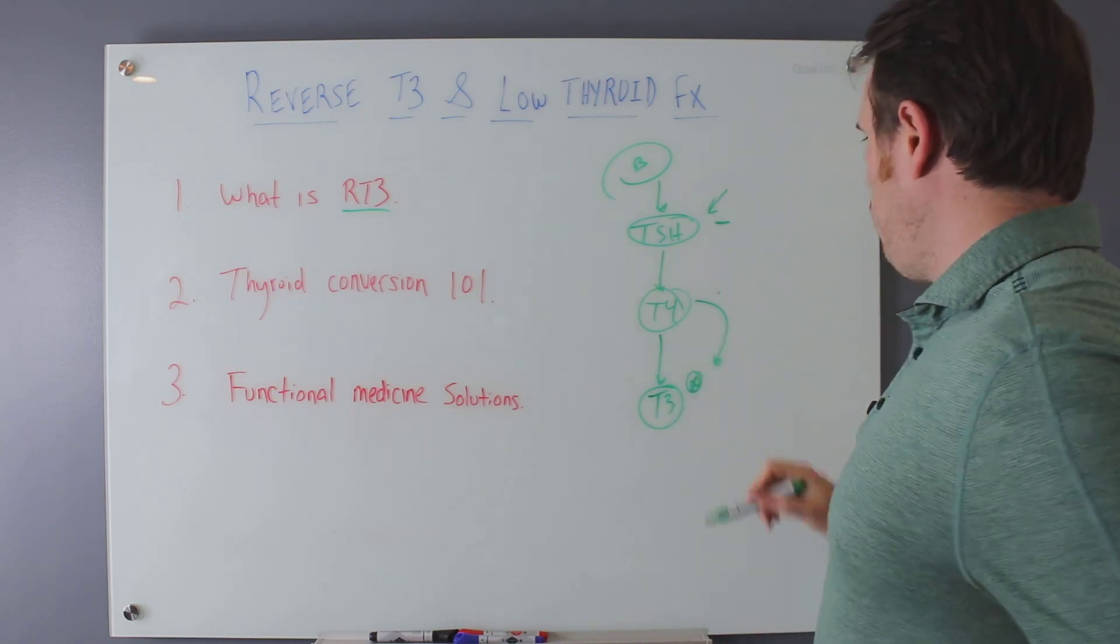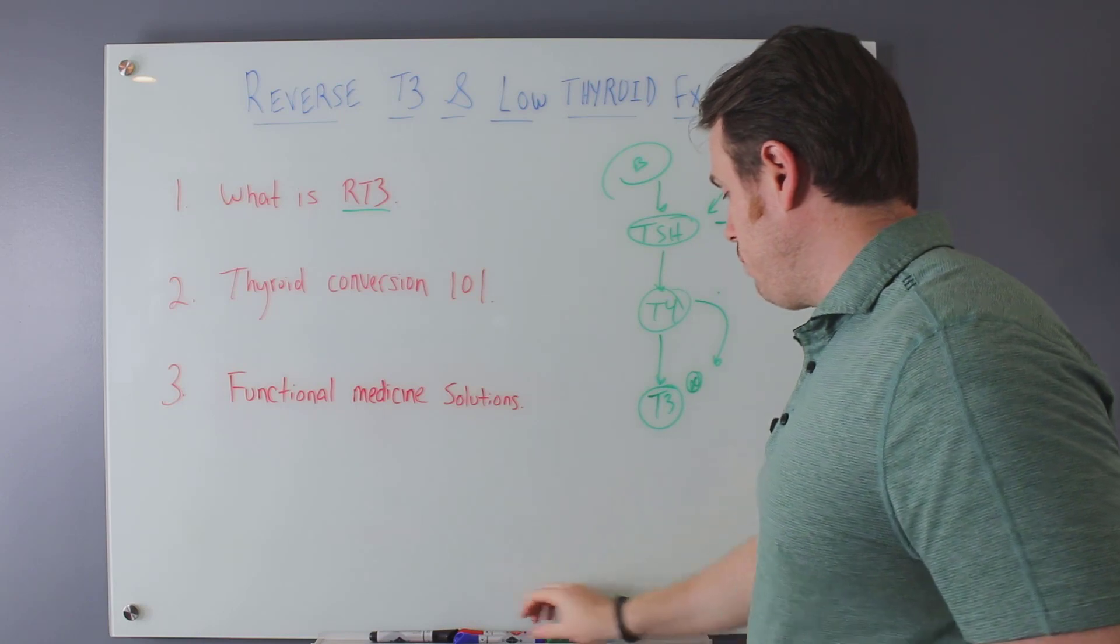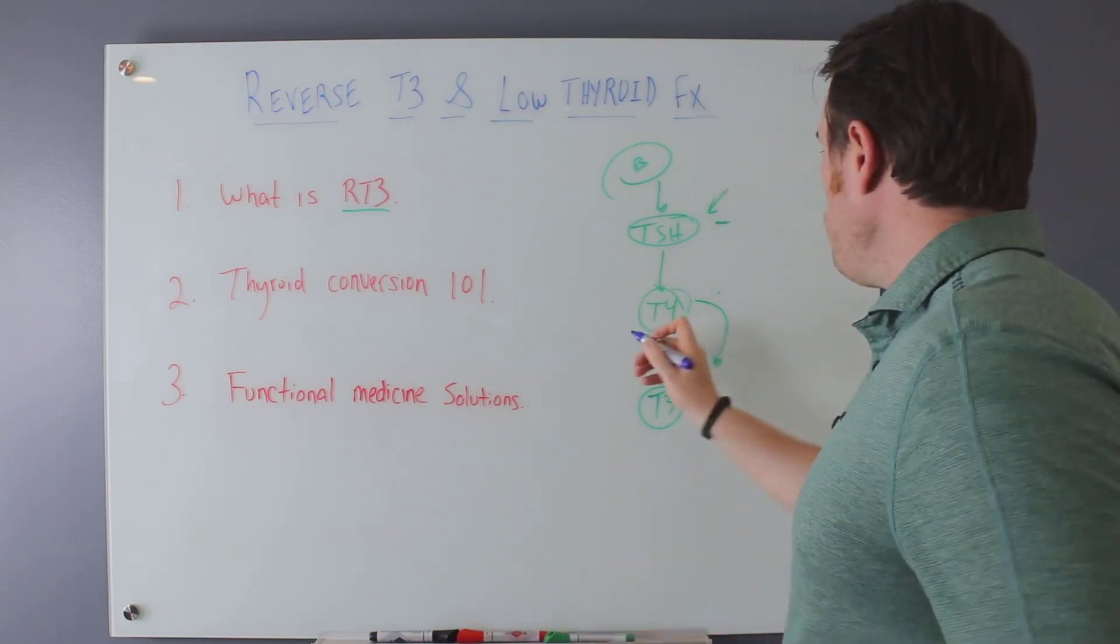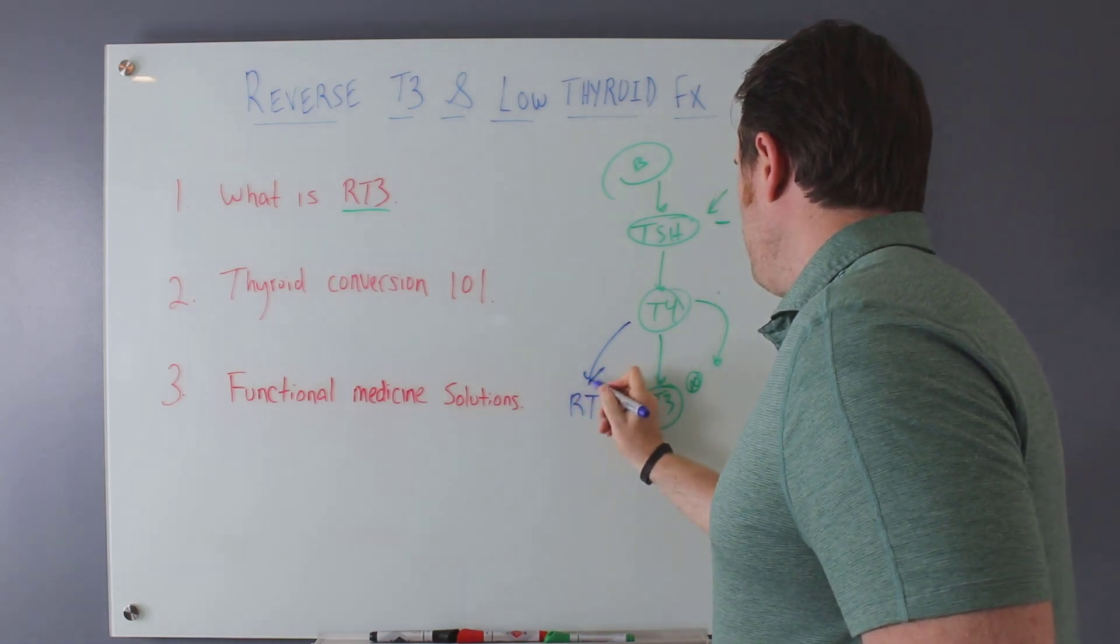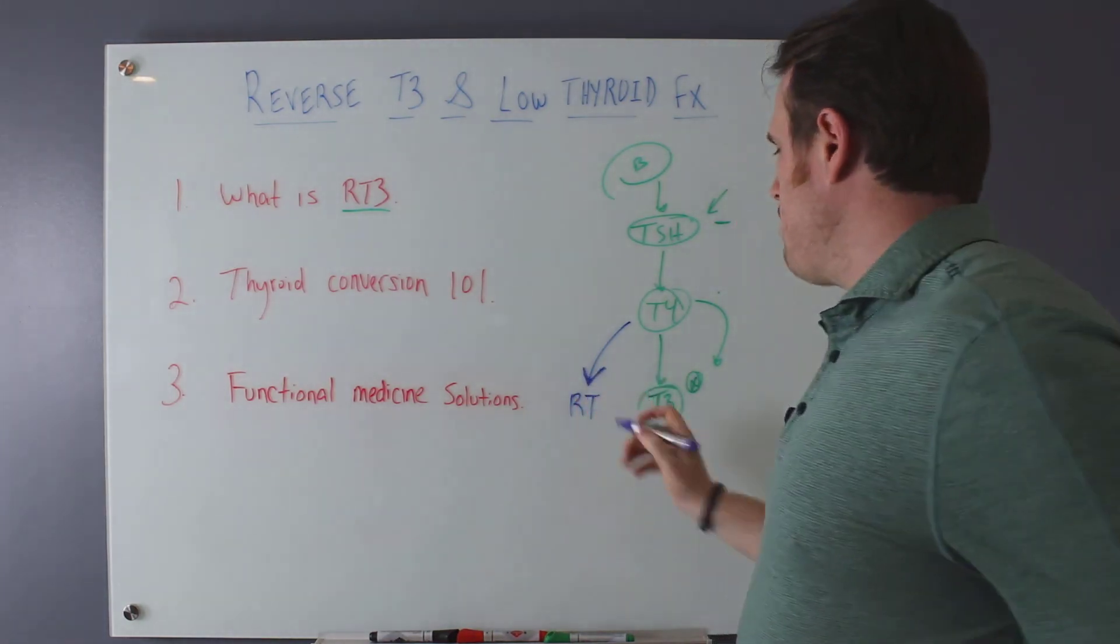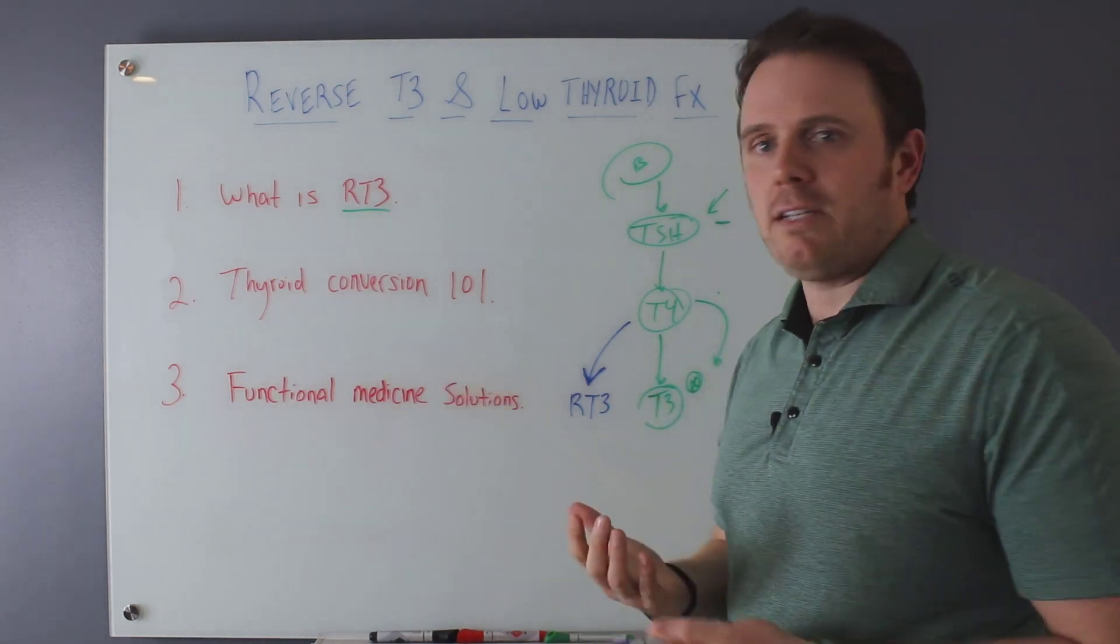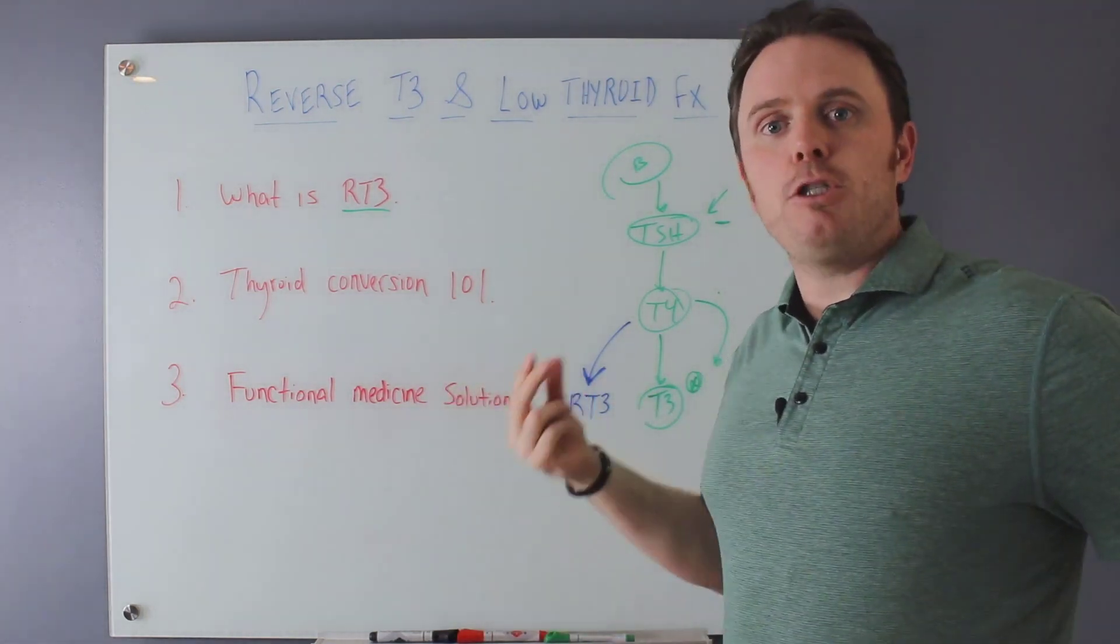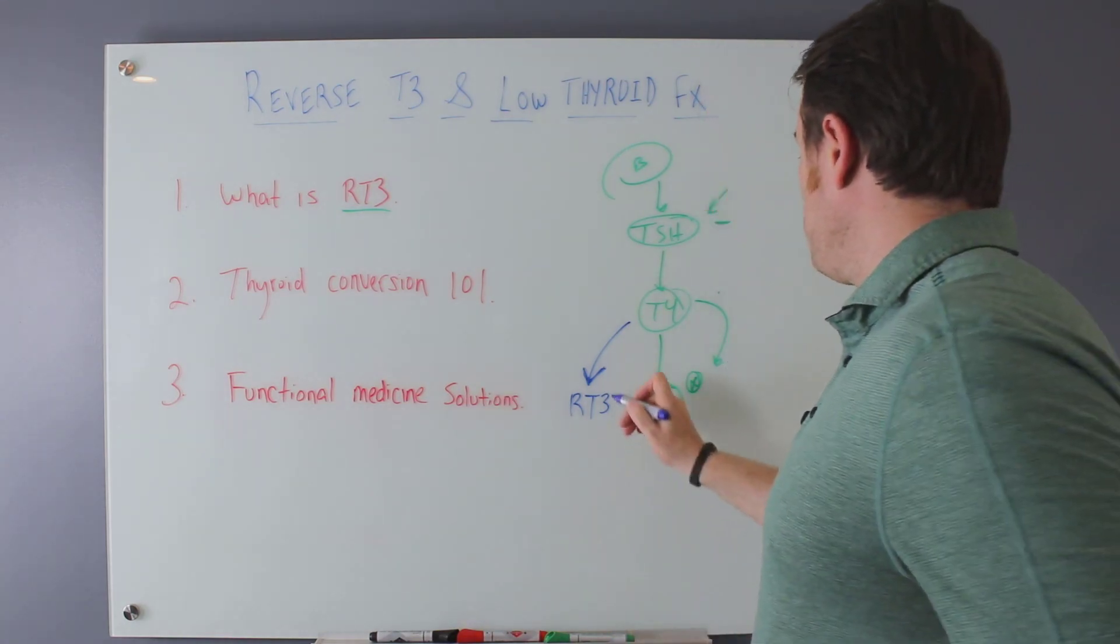So T4 goes to T3. This is like the linear, perfect pathway that we want to see. But what happens sometimes is we have the side pathway that happens here called reverse T3. And think of reverse T3 as metabolic blanks in your gun. So you imagine you have a magazine and then you have blanks in the gun. They fill up space. And when you pull the trigger, you get a noise, but no major bullets come out, right? Well, this is what happens.